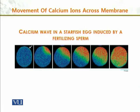For example, in this diagram you can see a calcium wave in a starfish egg induced by a fertilizing sperm. As we move from one side to another, we can see how the excess calcium causes the egg to emit light, which serves as a marker or indicator of how much calcium is present.